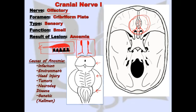As the olfactory fibers traverse backwards, they separate into medial and lateral striae, which continue on posteriorly, with the medial striae crossing over, to allow sensory information to be brought into the cortex.